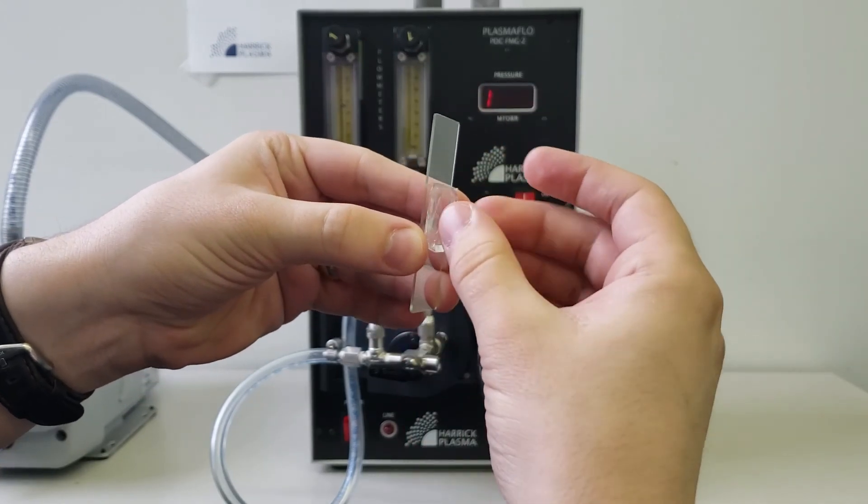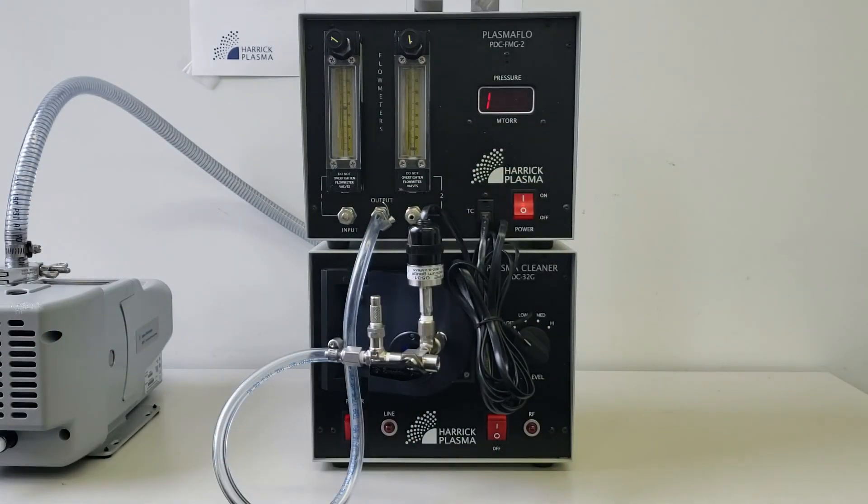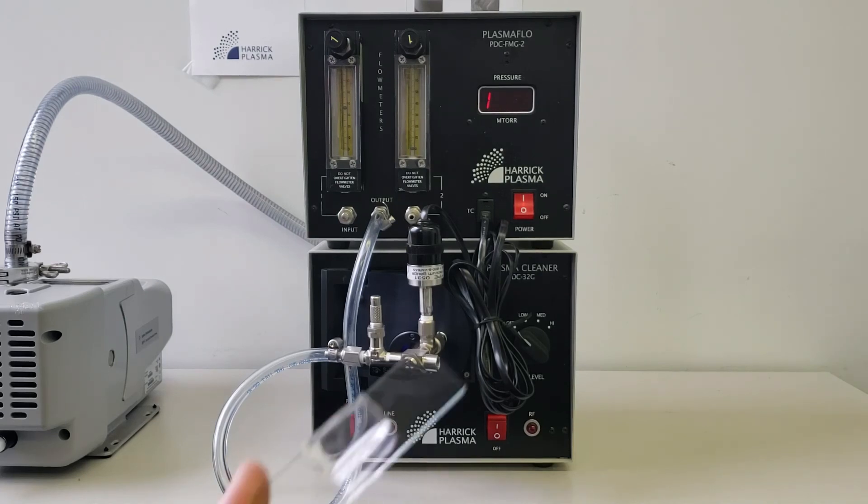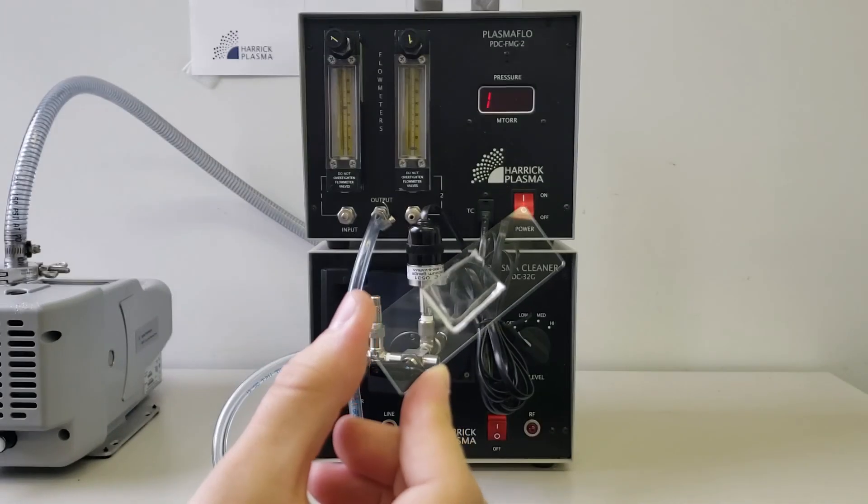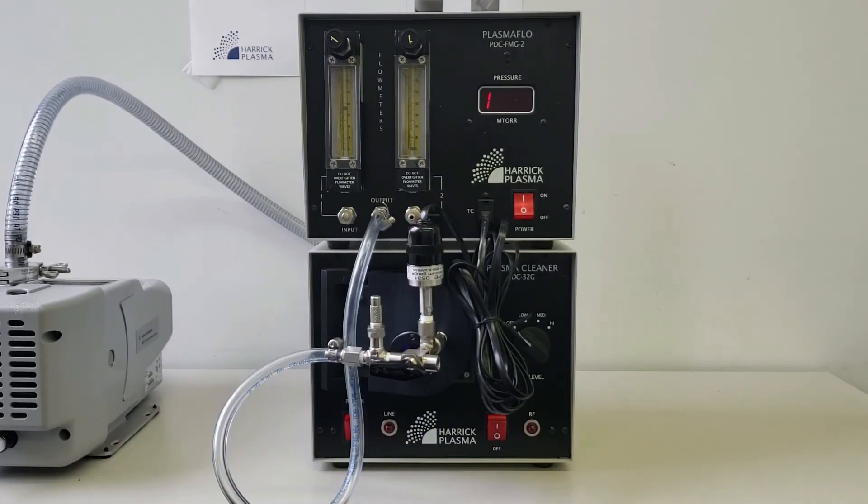In some cases, immersion in a polar fluid can preserve surface hydrophilicity. Additionally, many labs heat the assembled device at around 80 to 100 degrees Celsius for 60 seconds. This can be done with a hot plate or an oven. The high temperature provides activation energy for additional bond formation.